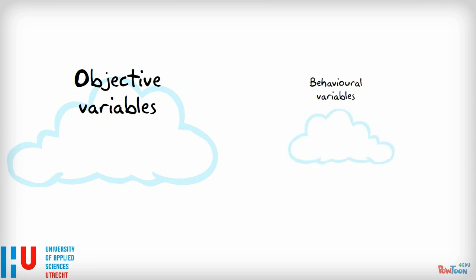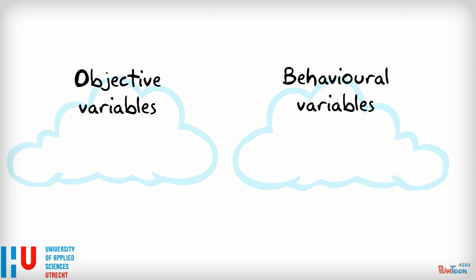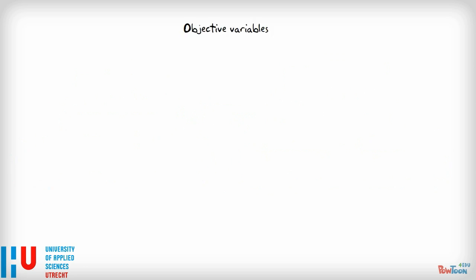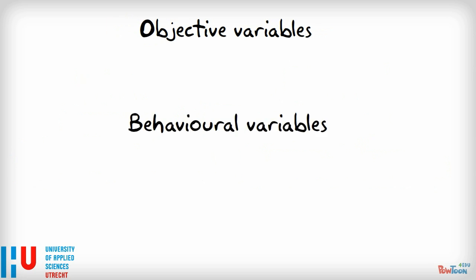Objective variables and behavioral variables in isolation do not define a segment, although it might be tempting to leave it at that once we've hit on a variable. It is essential to make connections between the two types of variables. The customer profile of a segment should include both objective and behavioral variables.